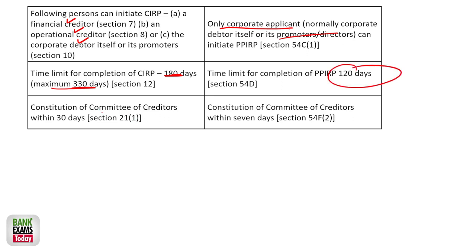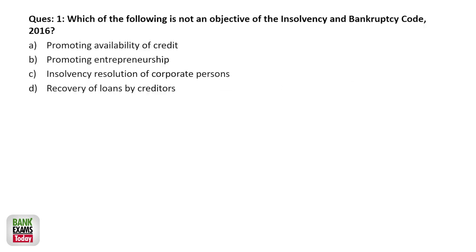Constitution of the committee of creditors: in CIRP, it takes a maximum of 30 days, while for PPIRP, within seven days you need to constitute the committee of creditors. So this is the subtle difference between PPIRP and CIRP.